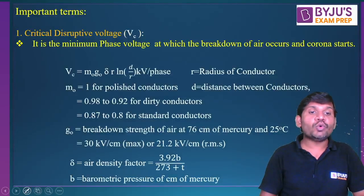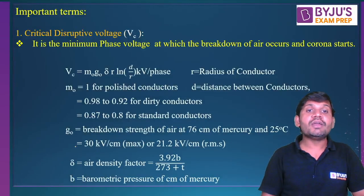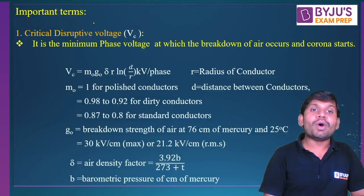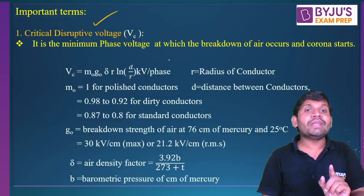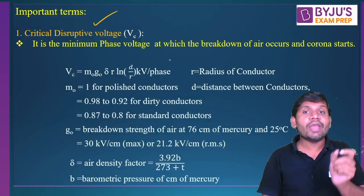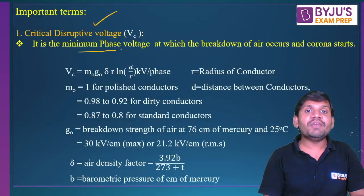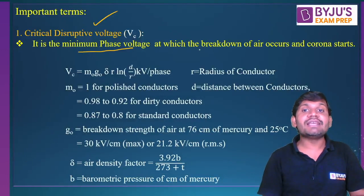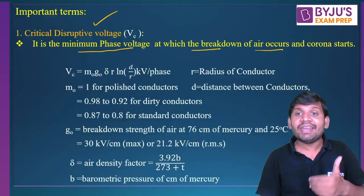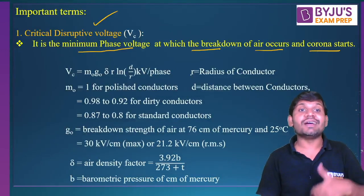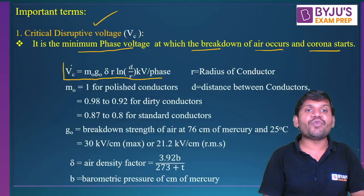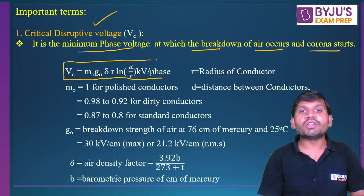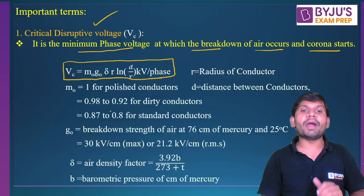This is very important for those preparing for competitive exams. With respect to the corona concept, these formulas are very important. What is the critical disruptive voltage? The critical disruptive voltage is a phase voltage — it is also an RMS voltage. It is the minimum phase voltage at which the breakdown of air occurs and corona starts. This is a very important formula to solve problems.